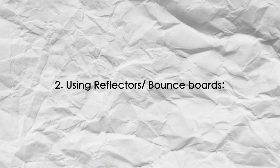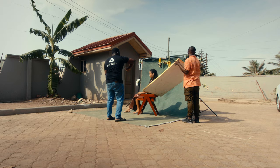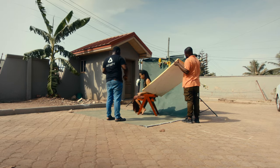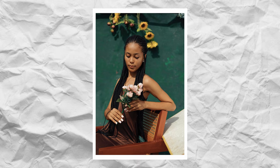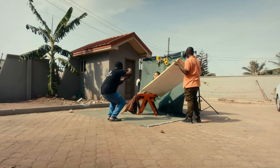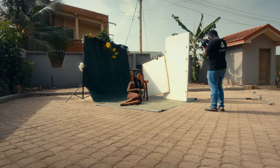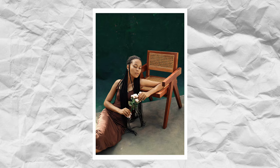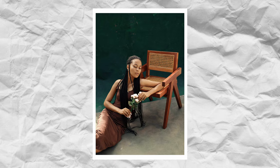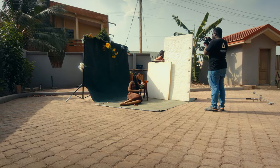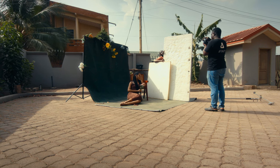The second tip is the usage of reflectors. Reflectors are used to bounce light back onto the subject, creating a more even and flattering light. Reflectors can be purchased or made from materials like foam board, aluminium foil, or even shoot-through umbrellas. Figure out which one you want to use. I personally prefer bounce cards, which produce diffused reflected light onto my subject.